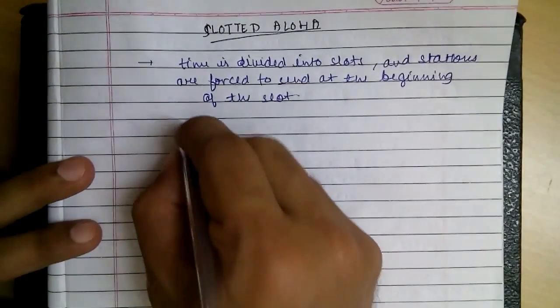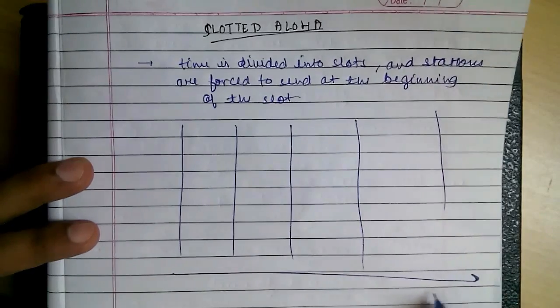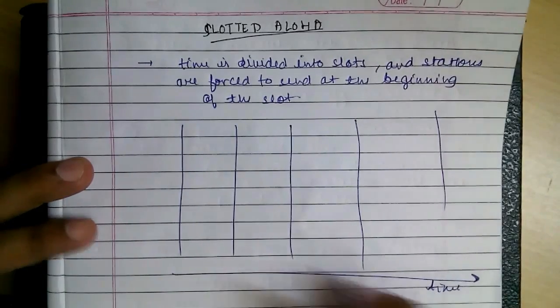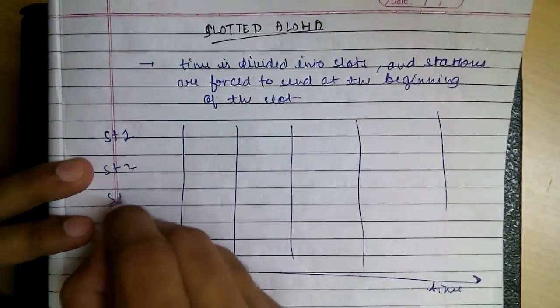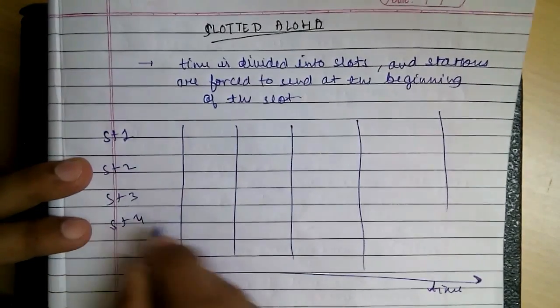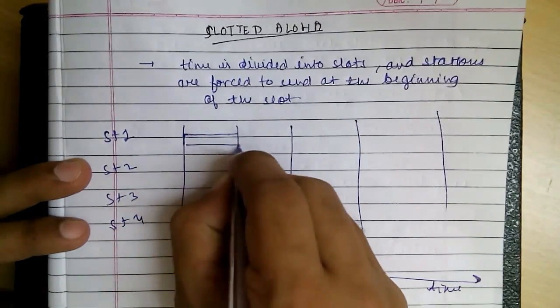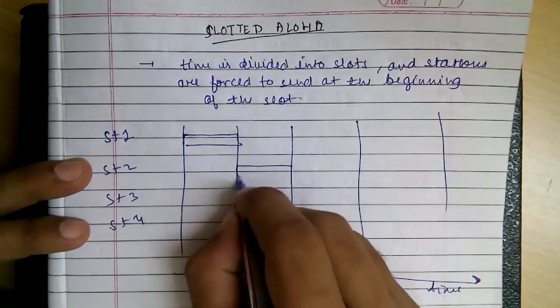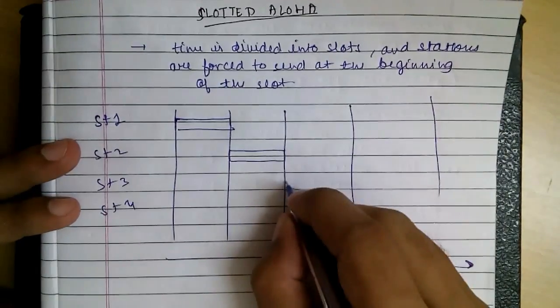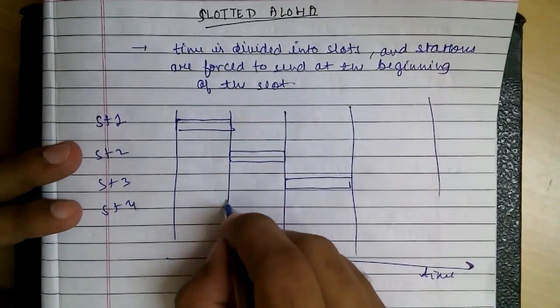So see, these are the various slots. This is time, and say this is station 1, station 2, station 3, and station 4. So it can only send at the beginning - station 1, station 2 sends at the beginning of this, station 3, station 4.